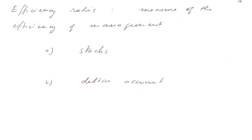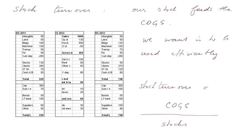Let's turn to efficiency ratios. These are measures of the efficiency of management of the assets of the firm. We shall look at stocks and debtors account. First of all, stock. There's a ratio called the stock turnover. Remember that our stock here feeds the cogs. So we want it to be used efficiently, the stocks here, or the average stock.